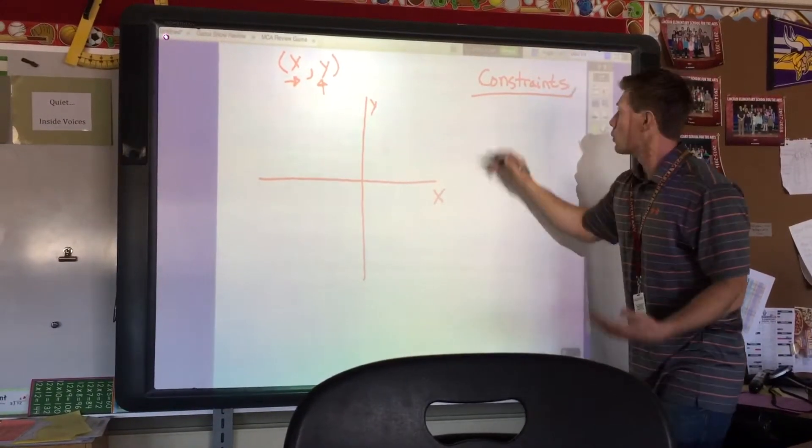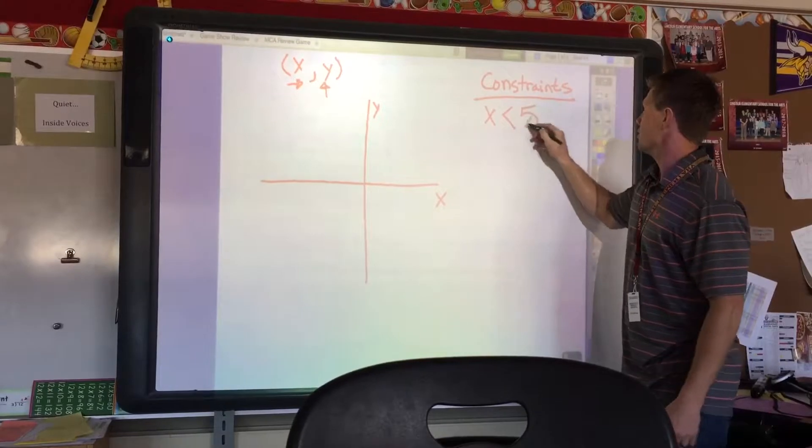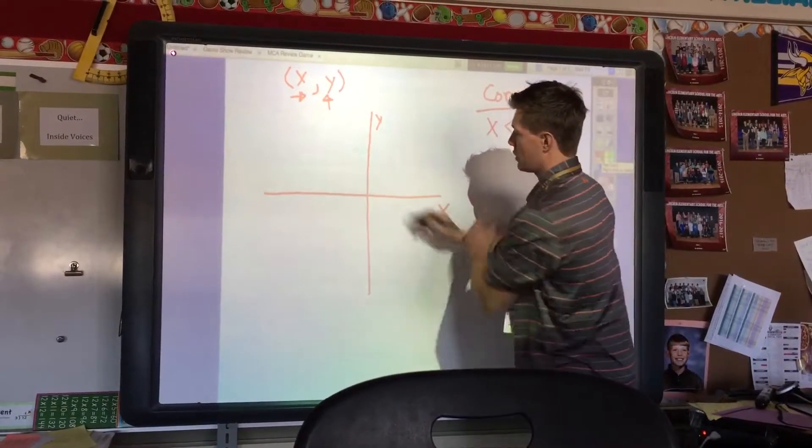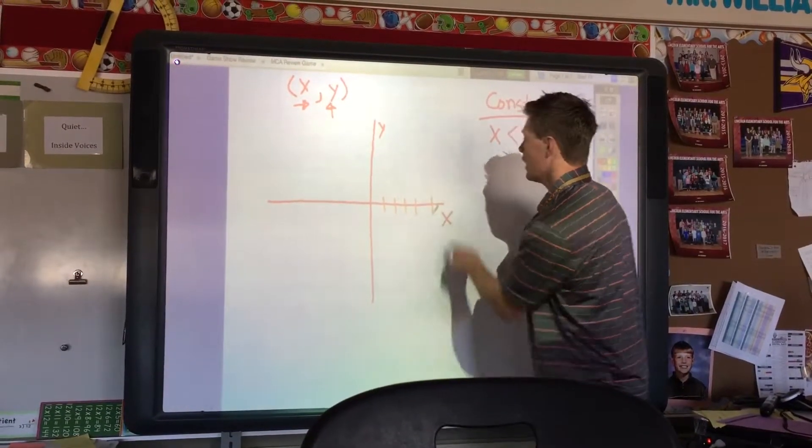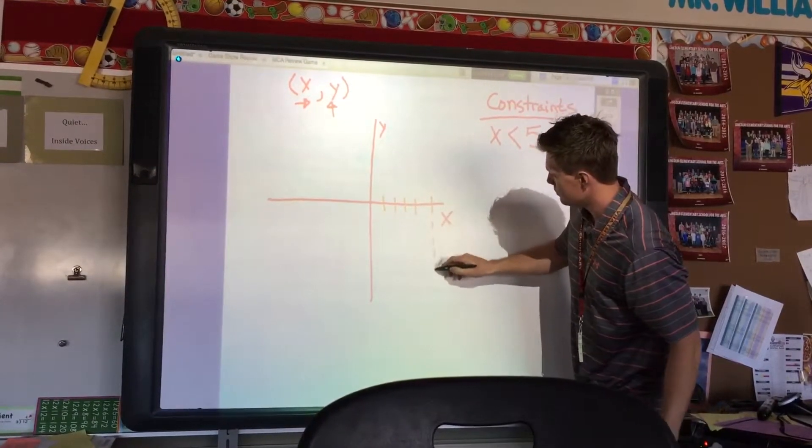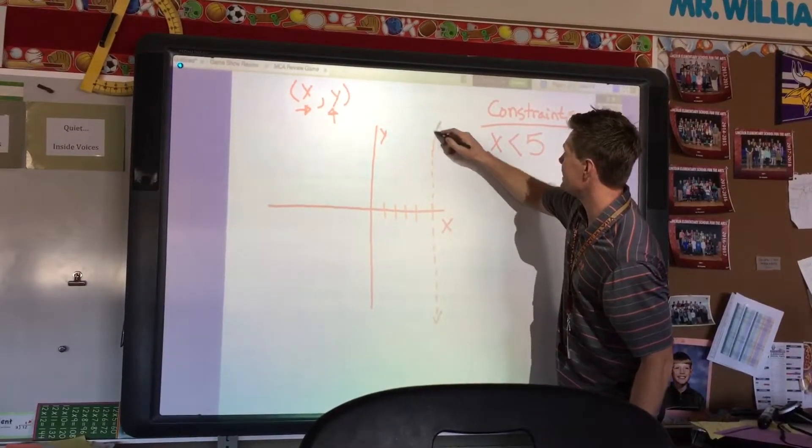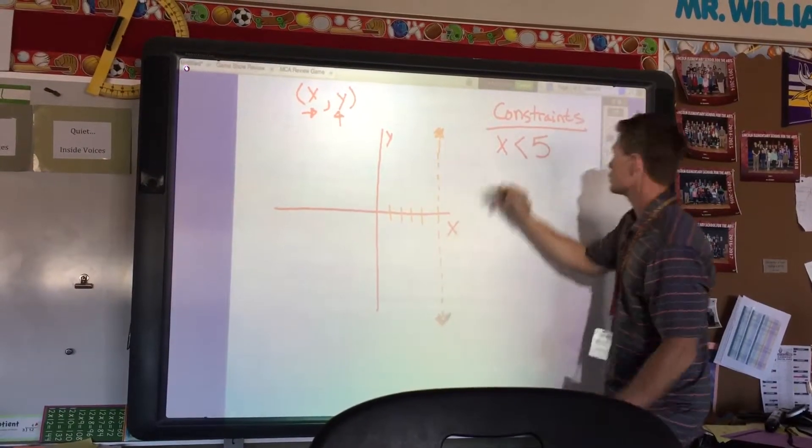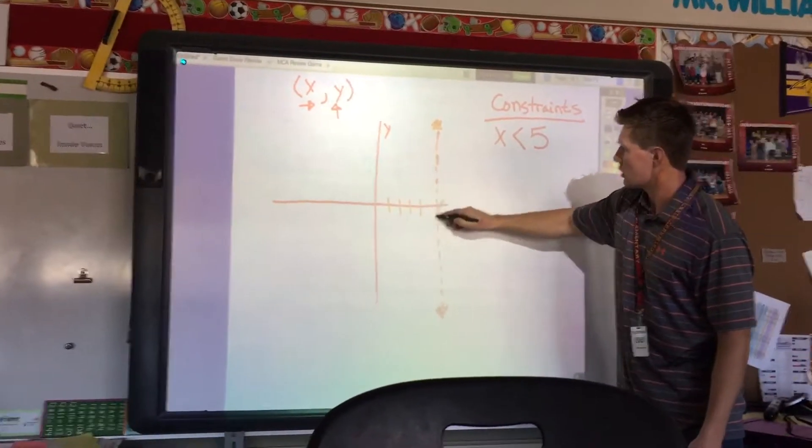Our constraints here, we're going to have x is less than 5. And knowing this, if x is less than 5, here we have our coordinate grid. Here's 1, 2, 3, 4, 5. And because it says less than 5, we're going to have a dashed line here. And what the dashed line means is it cannot equal 5. It has to be less than 5. So here's our first line. x is less than 5. And here is our graph.